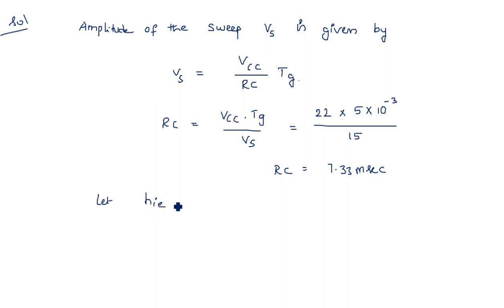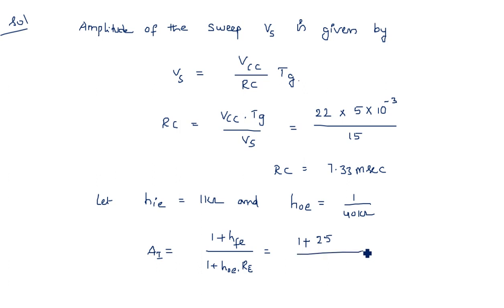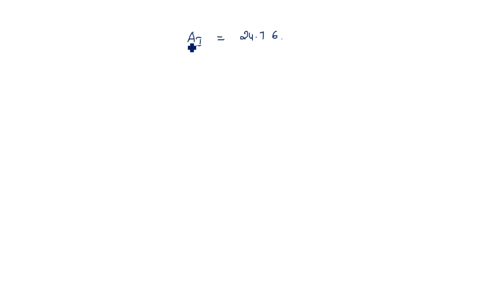Let HIE equal to 1 kilo ohm (the input impedance of the common emitter transistor) and HOE (output admittance) equal to 1/40 kilo ohms. The current gain AI is equal to (1 + HFE) / (1 + HOE × RE). Substituting: HFE minimum is 25, HOE is 1/40 kilo ohms, and RE is 20 kilo ohms. This gives AI equal to 24.76.